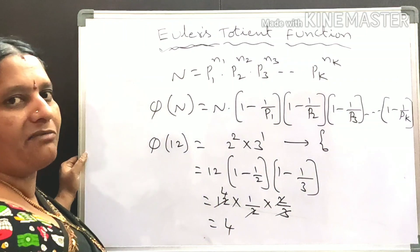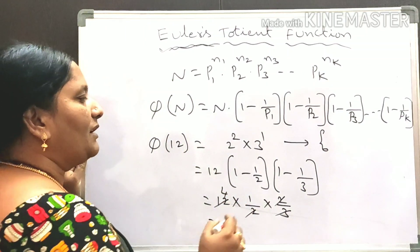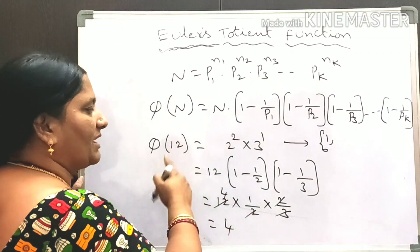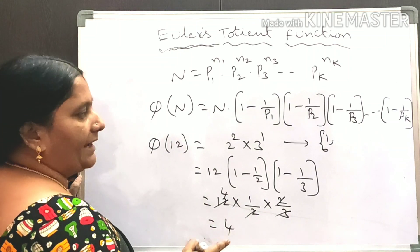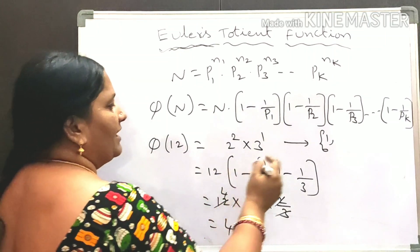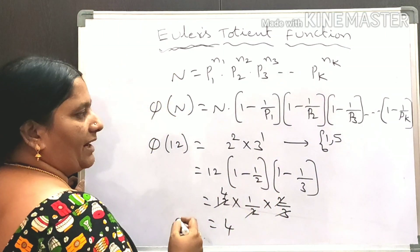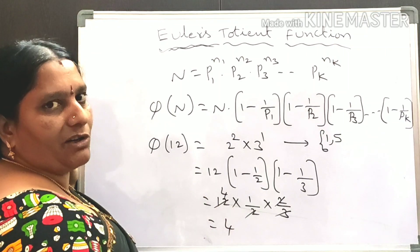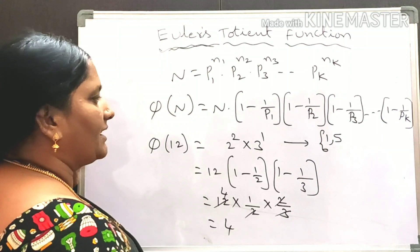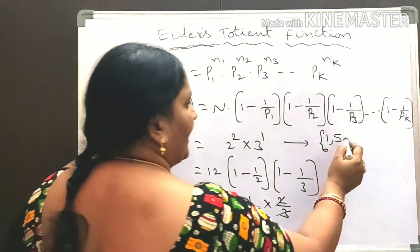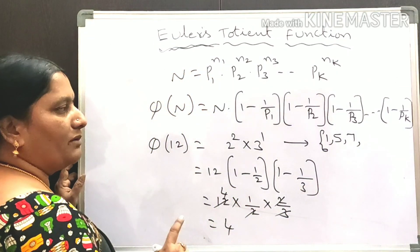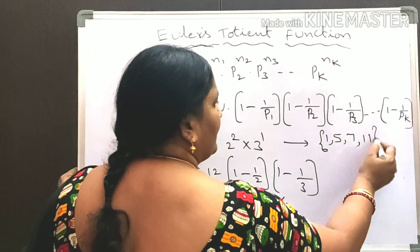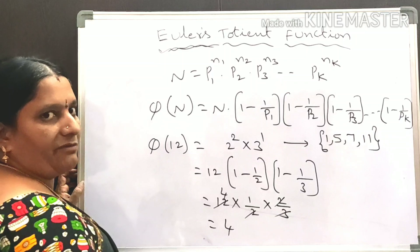Let us verify by listing positive integers less than 12 that are relatively prime to 12. GCD(1,12)=1 ✓, GCD(2,12)=2 ✗, GCD(3,12)=3 ✗, GCD(4,12)=4 ✗, GCD(5,12)=1 ✓, GCD(6,12)=2 ✗, GCD(7,12)=1 ✓, GCD(8,12)=4 ✗, GCD(9,12)=3 ✗, GCD(10,12)=2 ✗, GCD(11,12)=1 ✓. So phi of 12 = 4, confirmed.